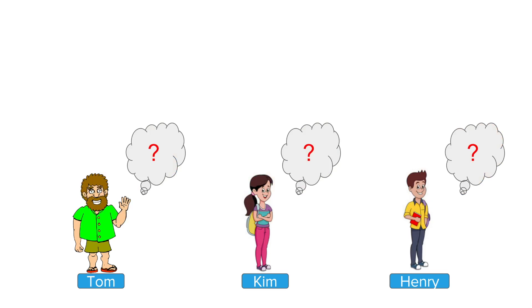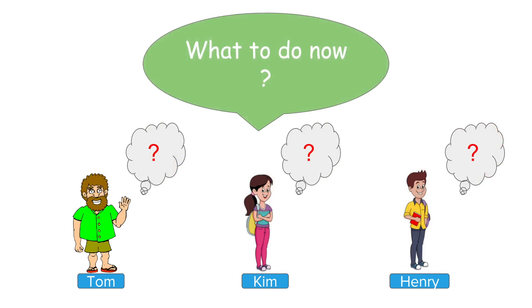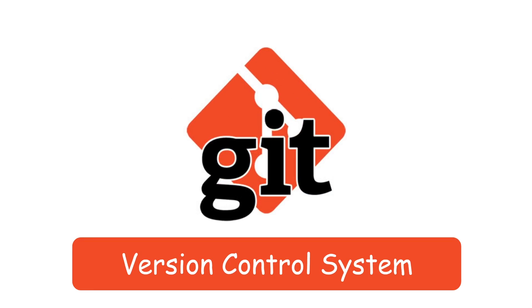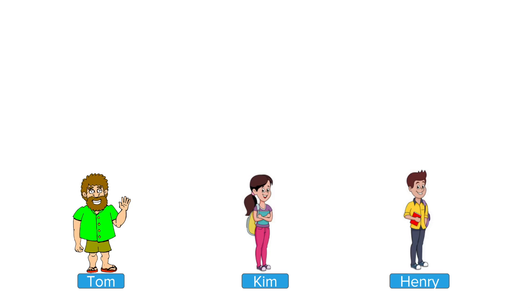So we are back with the same problem. We need a solution which can manage all our changes and version controlling in an automated way. The answer is using a version control system like Git. Let us see what we can do with Git.